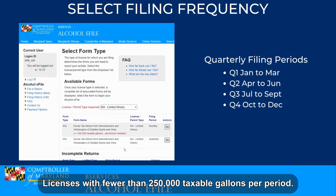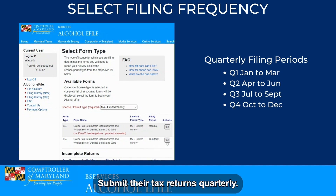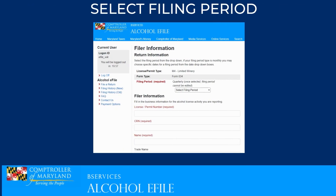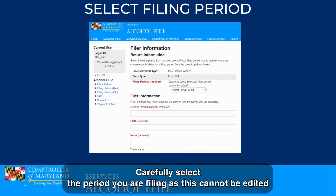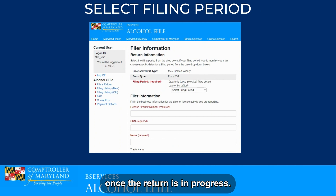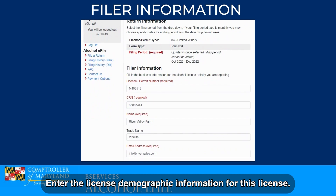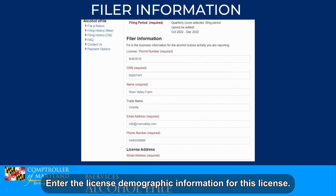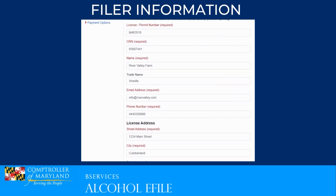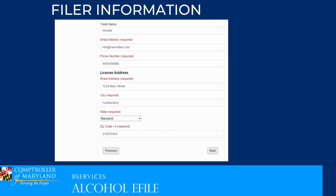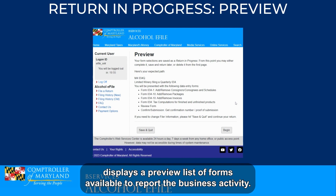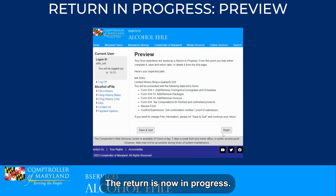Licenses with fewer than 250,000 taxable gallons per period submit their tax returns quarterly. Carefully select the period you are filing, as this cannot be edited once the return is in progress. Enter the license demographic information for this license. Once entered, the system displays a preview list of forms available to report the business activity. The return is now in progress — click Begin to continue.